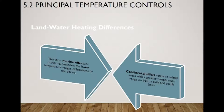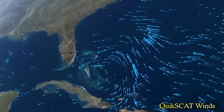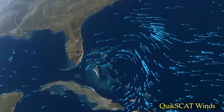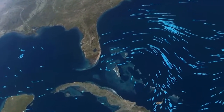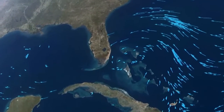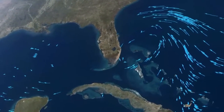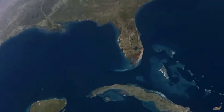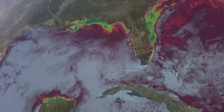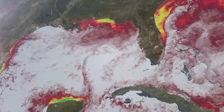The land-water interaction affects different locations — they call it the marine effect, which describes the lower temperature range of a location by the ocean, and the continental effect, referring to inland areas with a great temperature range on both a daily and yearly basis.